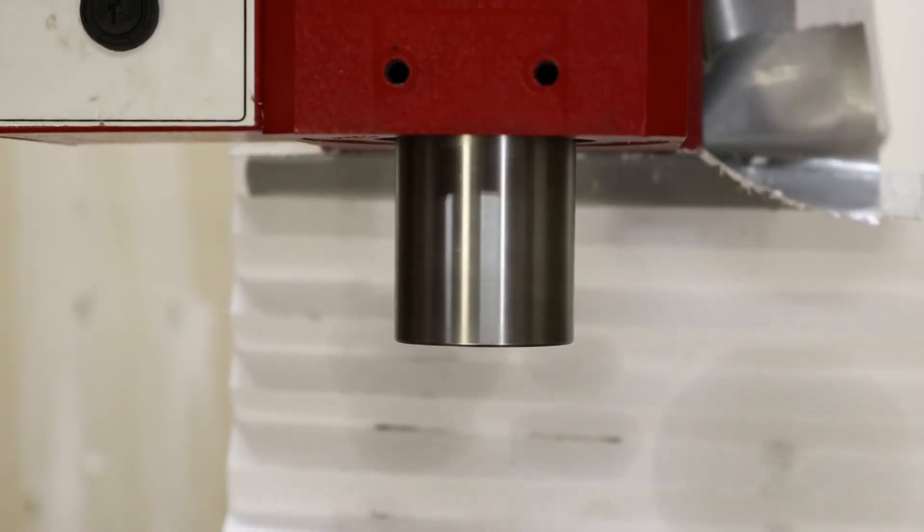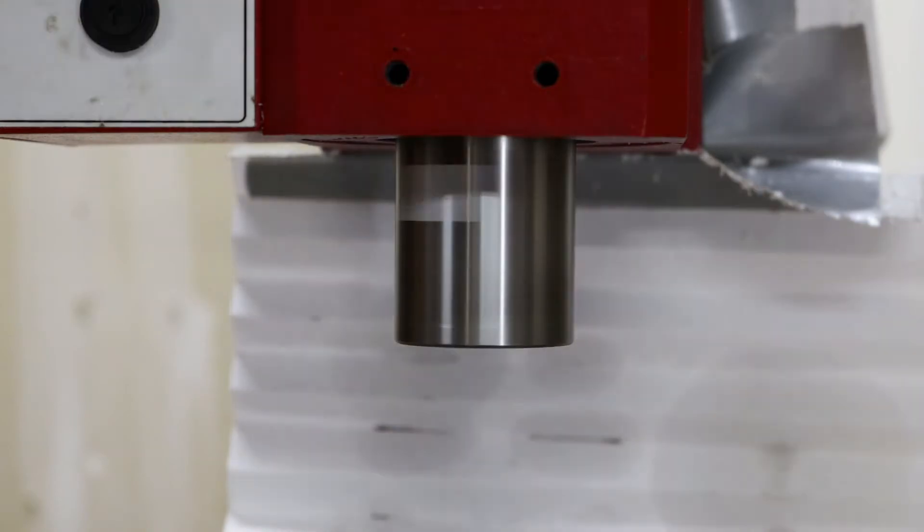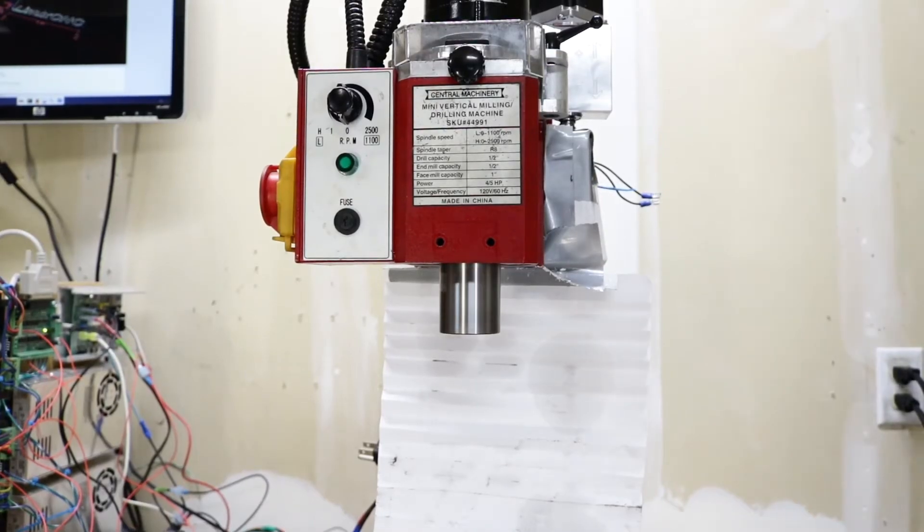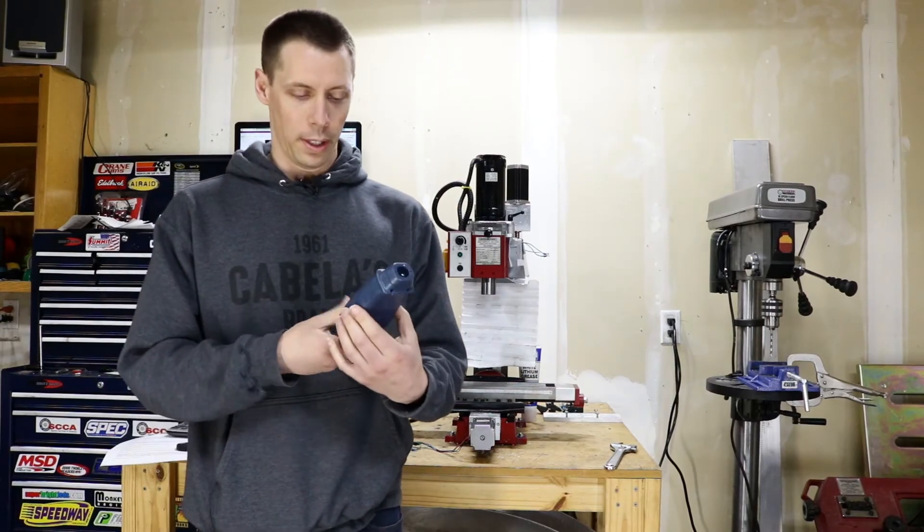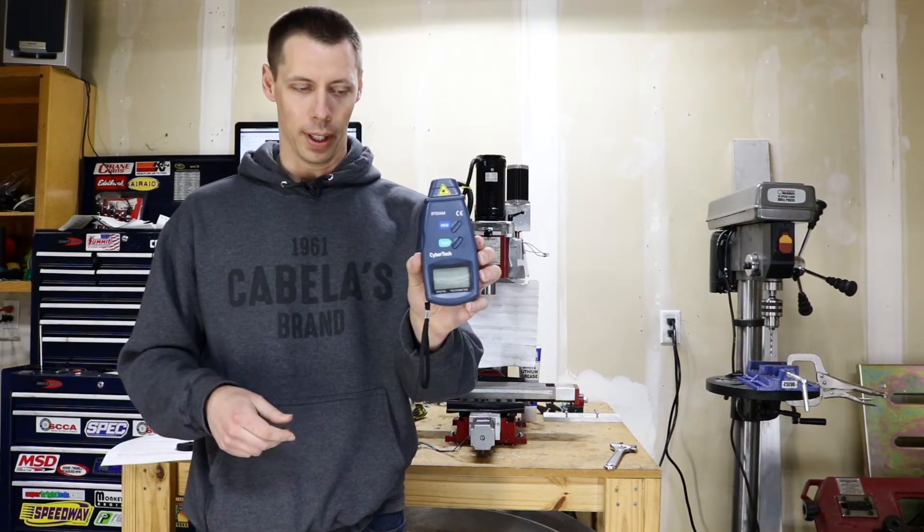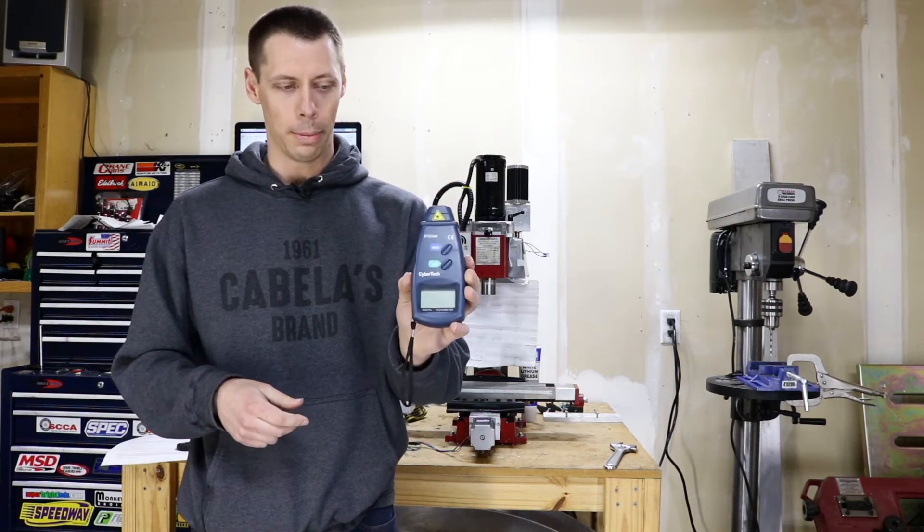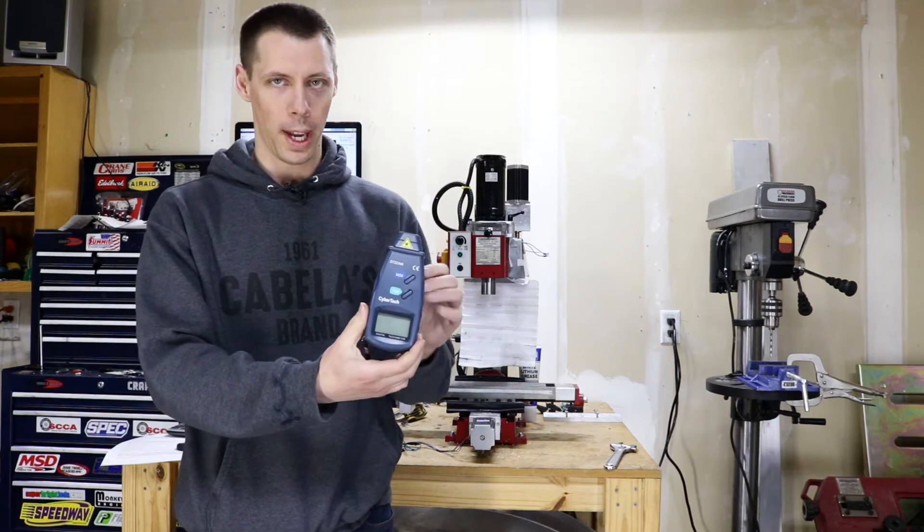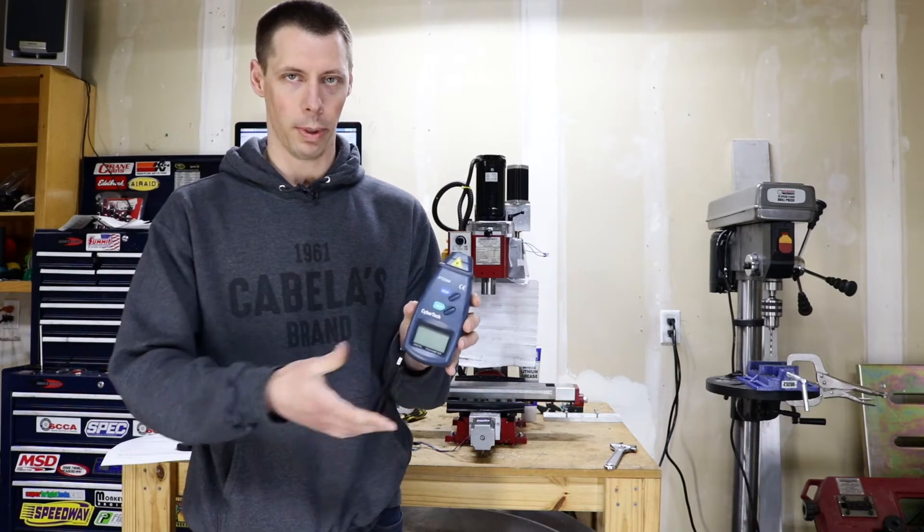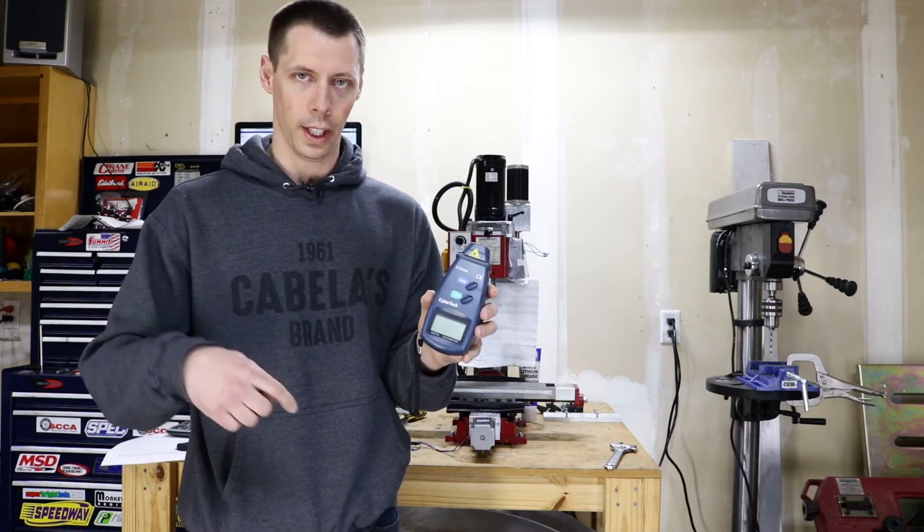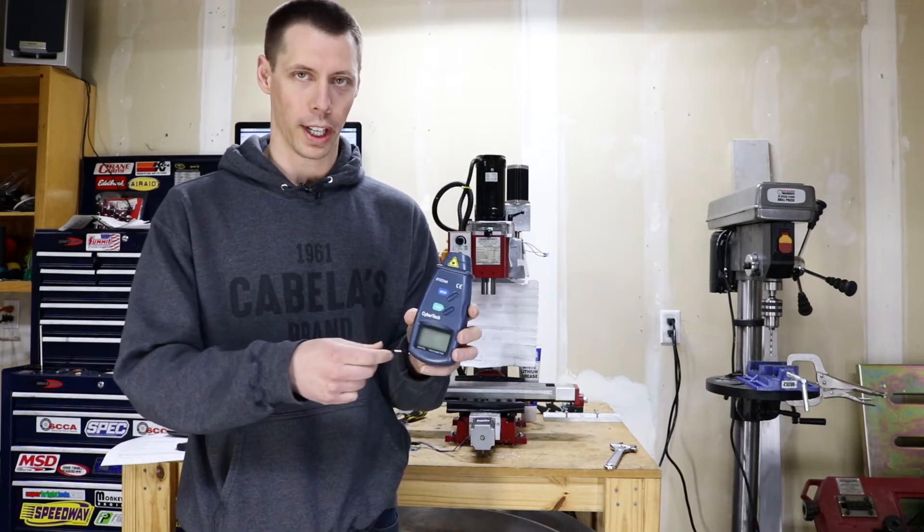200, it's starting to move, so that's at 200 right there, 300, 400, 500, 600, 700, 800, 900, and 1000. So right there we've got 1000 RPM commanded to the spindle, and I went ahead and went on Amazon and picked up one of these little laser photo tachometers.